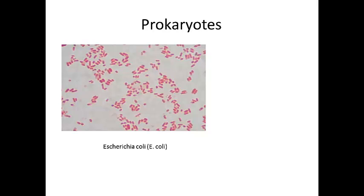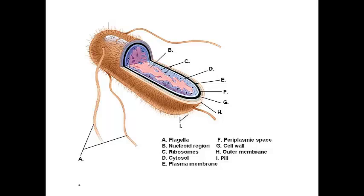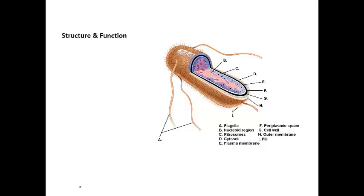The IB program uses E. coli as the representative prokaryote. So we're going to look at E. coli in more detail. Here's an image of E. coli with some of its ultrastructure labeled, and we'll look at the ultrastructure in more detail.